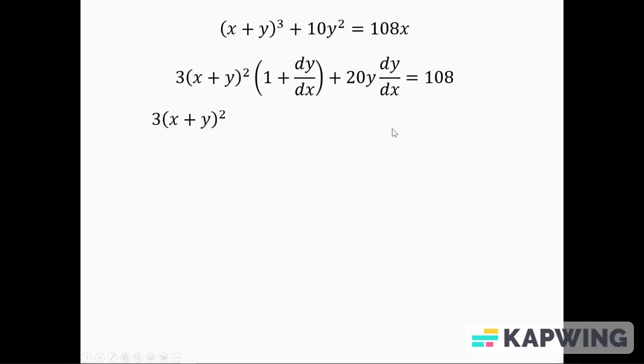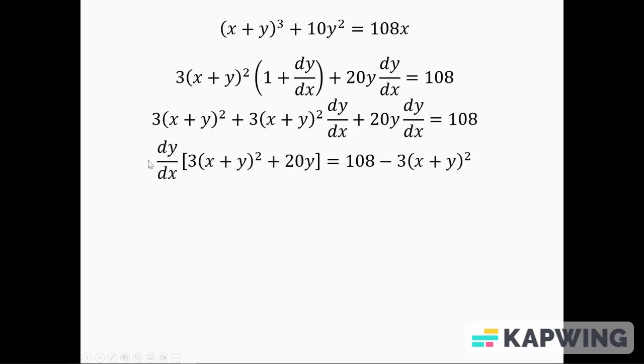Then I need to isolate the dy/dx, so I'm going to multiply this bracket out. I'll do 3(x+y)² times 1 and 3(x+y)² times dy/dx. So when I times this I get this, the rest stays the same for now. And what I'm going to do is take this term over the other side so I've just got the dy/dx terms on this, and take out the dy/dx as a factor. So I'll have dy/dx times a big bracket: the 3(x+y)² plus 20y divided by that bracket, and that's the given answer.